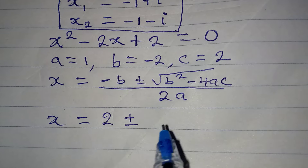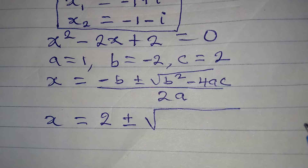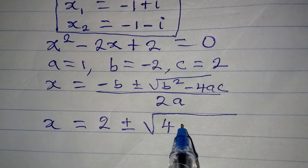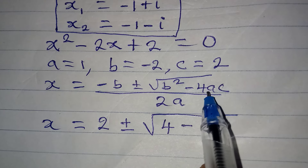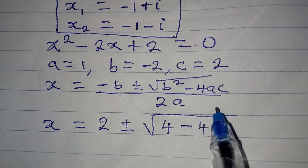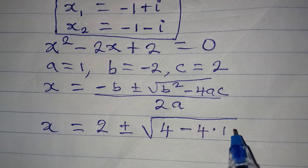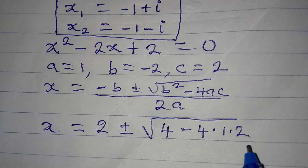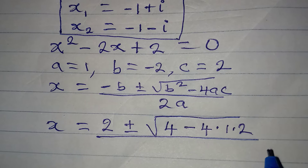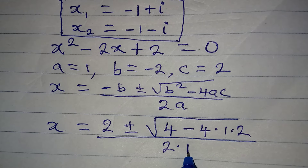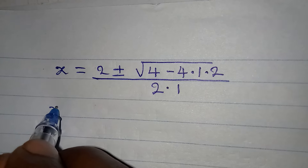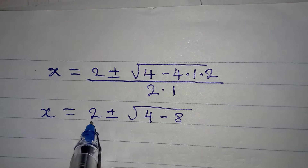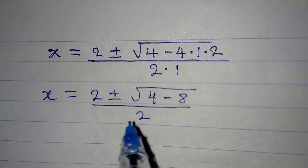In place of minus b we get plus 2 — because negative times negative gives positive. b squared is minus 2 squared which gives plus 4, then minus 4 times 1 times 2, all over 2 times 1. So x equals 2 plus or minus the square root of 4 minus 8, over 2.